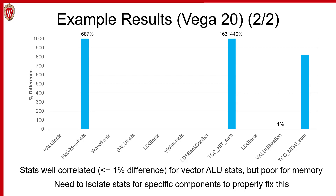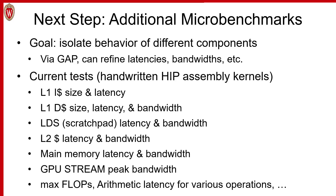To isolate stats for specific components, my students and I have been developing a series of microbenchmarks that can isolate the behavior of different components, with the goal of passing them into GAP to refine latencies, bandwidths, and so on at different levels of the memory hierarchy. We've written tests in handwritten assembly using the GPU HIP programming language to measure things like L1 instruction and data cache size, latency, and bandwidth, as well as similar metrics for other memories in the system, including maximum FLOPS and arithmetic latency for key operations.